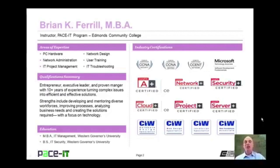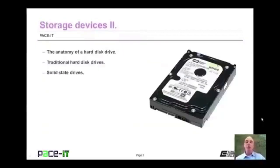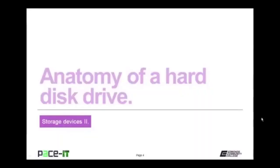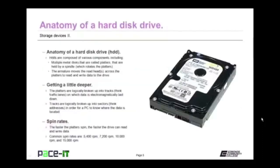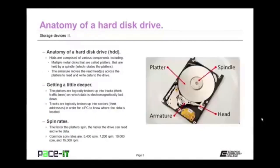Welcome to PACE IT's session on storage devices part two. Today we're going to discuss the anatomy of a hard disk drive, some aspects of the traditional hard disk drive, and items about solid state drives. Hard disk drives are composed of various components including multiple metal disks called platters, held in place by a spindle which rotates them, and the armature which moves the read head across the platters to read and write data.